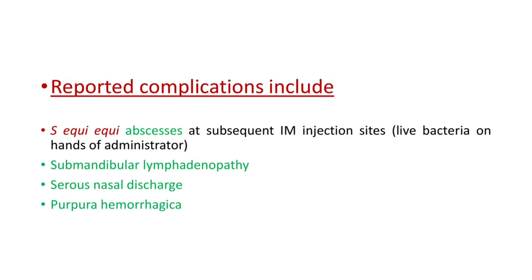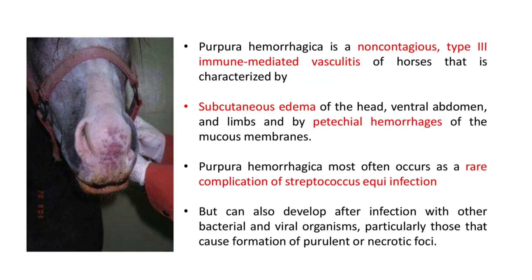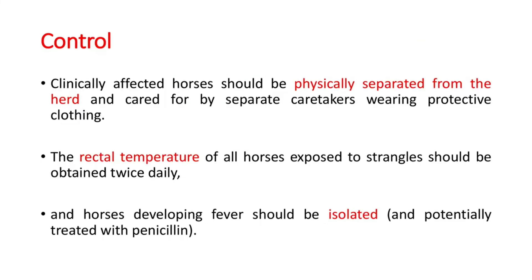Reported complications of the intranasal vaccine include Streptococcus equi equi abscesses at subsequent IM injection sites, live bacteria on the hands of the administrator causing submandibular lymphadenopathy, serious nasal discharge, and purpura hemorrhagica. Purpura hemorrhagica is a non-contagious type 3 immune-mediated vasculitis of horses characterized by subcutaneous edema of the head, ventral abdomen, and limbs, and by petechial hemorrhages of mucous membranes.